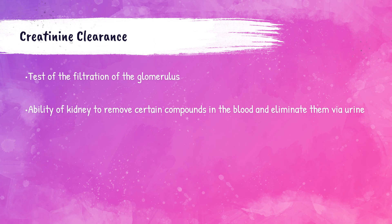I highly recommend watching that video before you watch this one on creatinine clearance practice problems. So just to recap briefly, the creatinine clearance is a test of the filtration of the glomerulus in the kidney, and it tests the ability of the kidney to remove certain compounds in the blood and eliminate them via urine. We do this via a calculation using creatinine values from the urine and also in the blood. So on the next slide, we're going to be discussing the calculations.